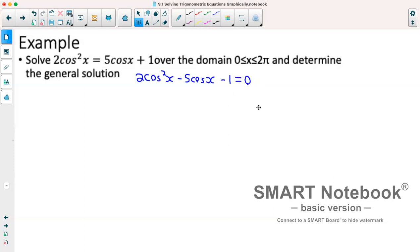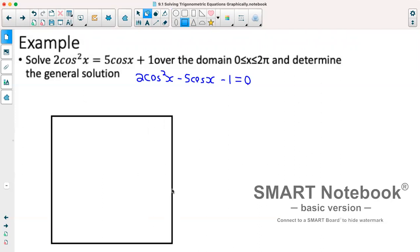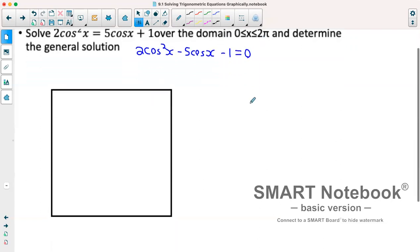I'll just draw what the window in my graphing calculator will look like. For this, because it tells us we're going from zero to 2π on our x-axis, we're going to go from zero to 2π.